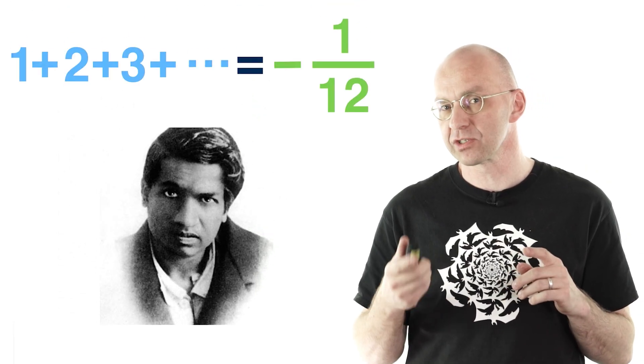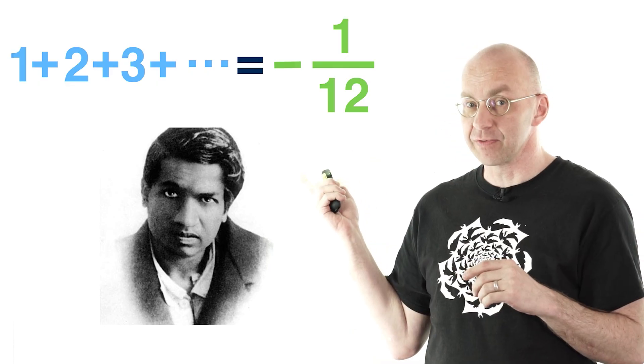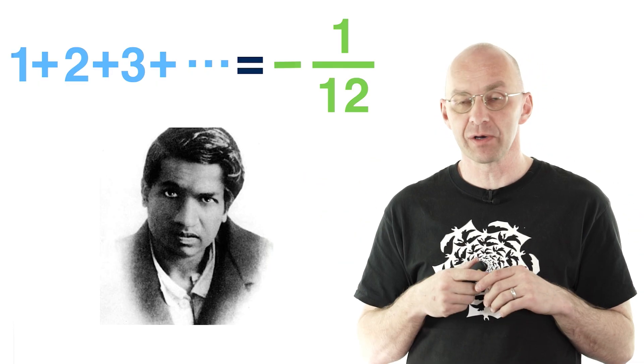You're watching a Mathologer video, so that probably means you're familiar with Srinivasa Ramanujan, one of the most ingenious mathematicians who ever lived. And you're probably also familiar with his strange counterintuitive identity: 1 plus 2 plus 3 and so on equals minus one twelfth. If you don't know about any of these things, check out my video about this.